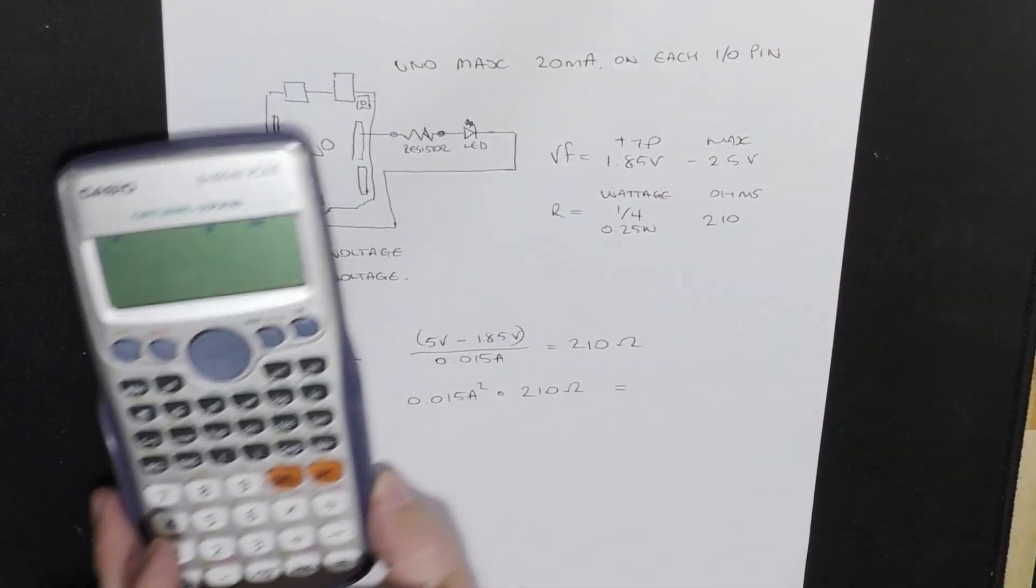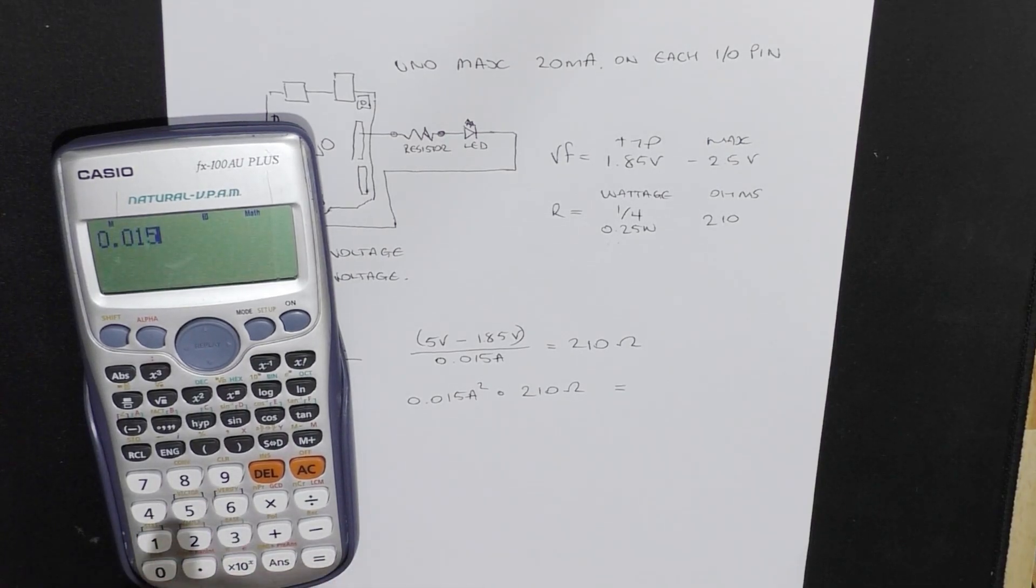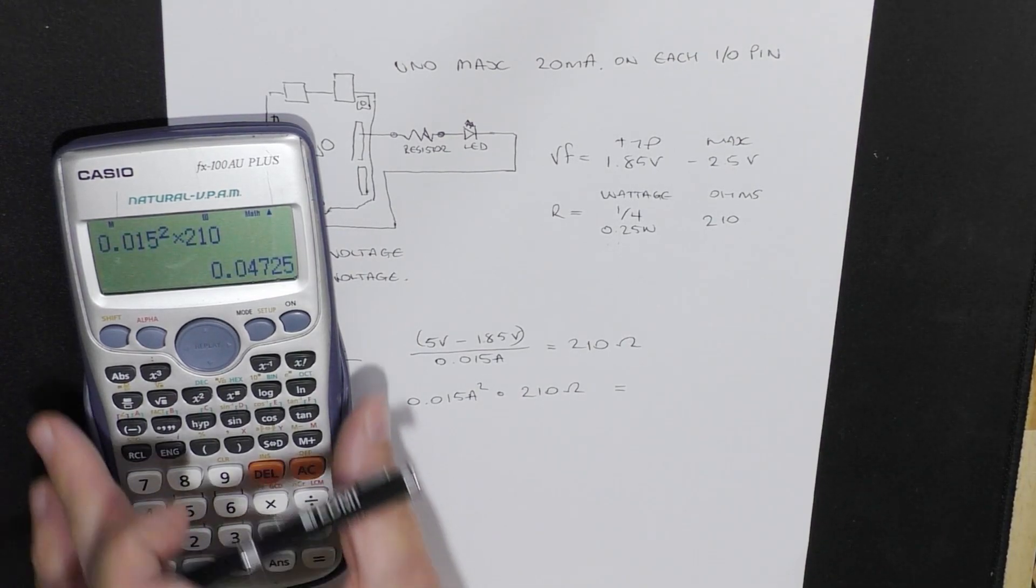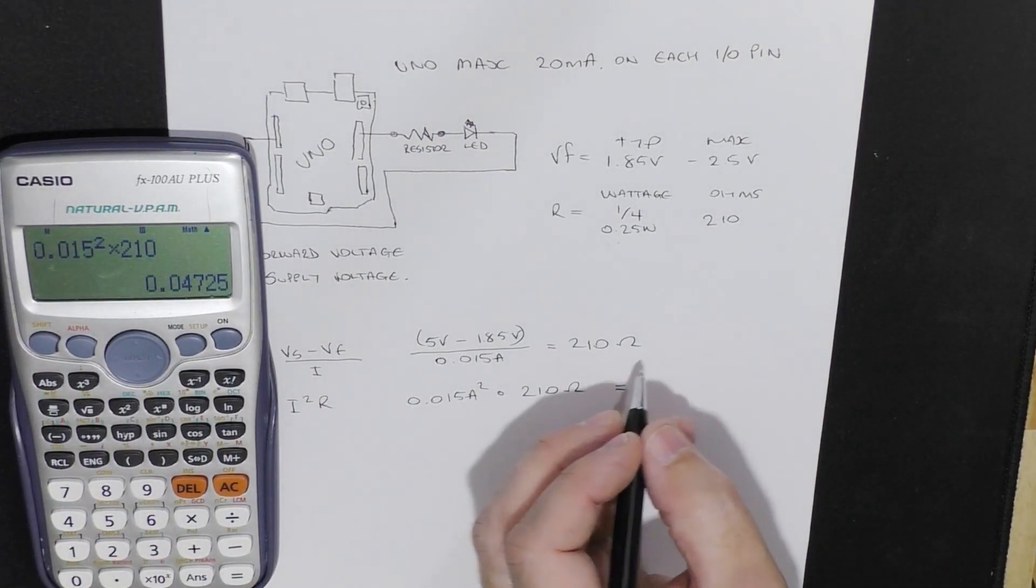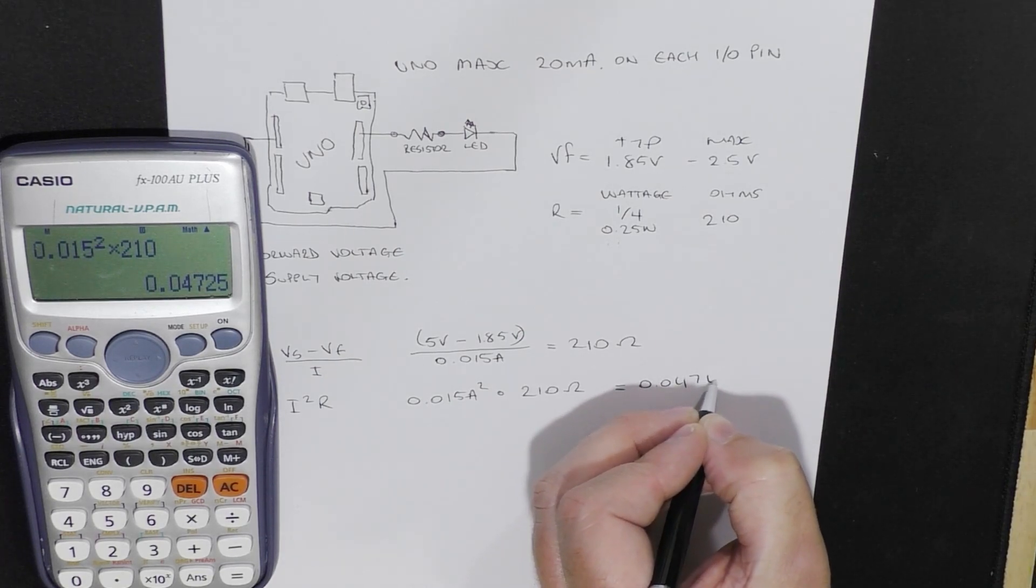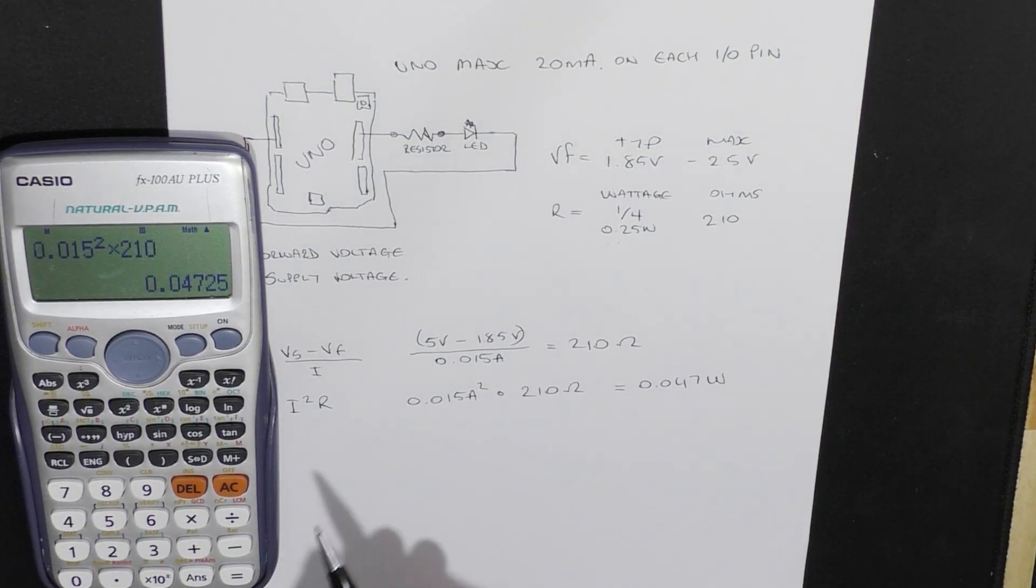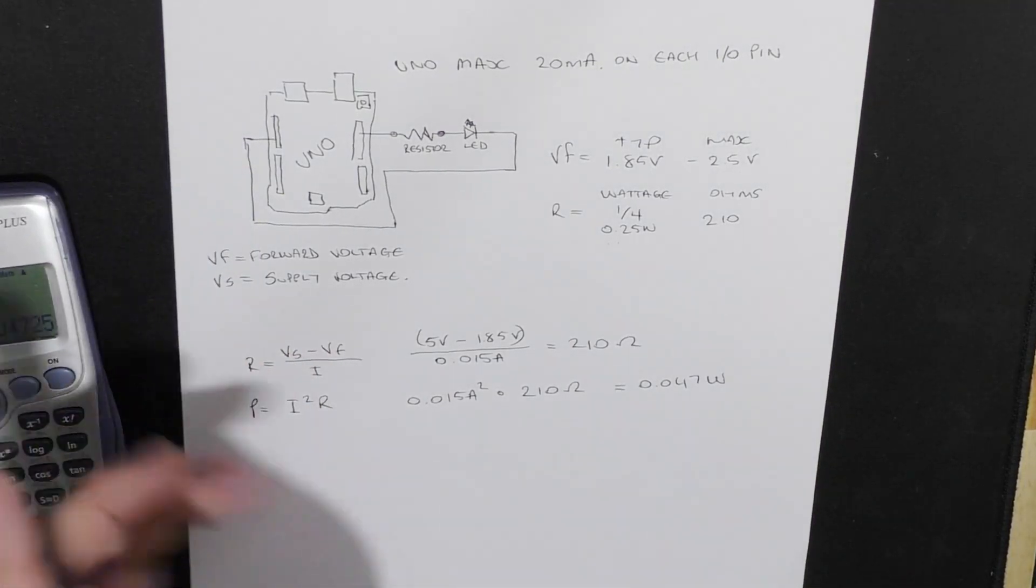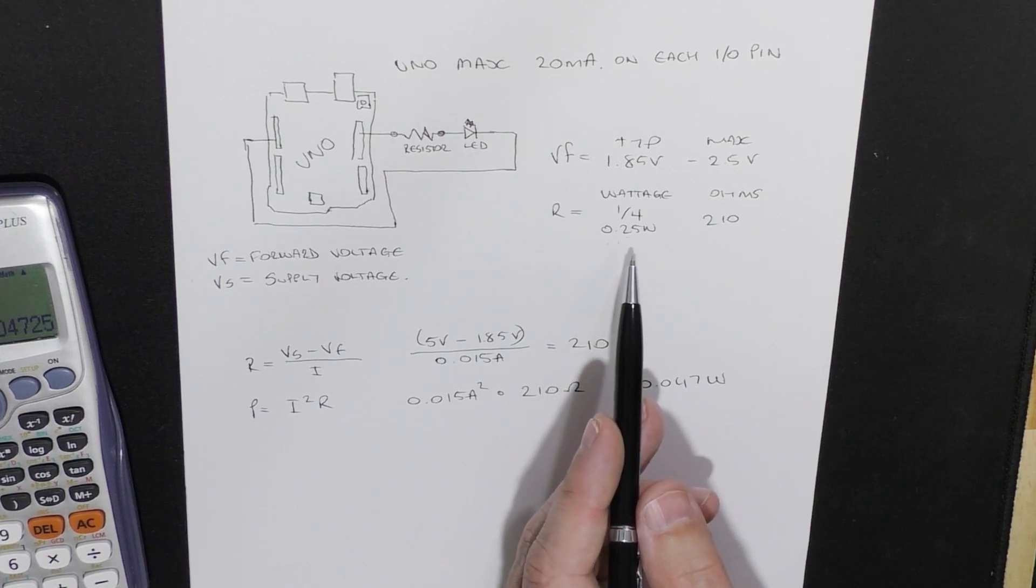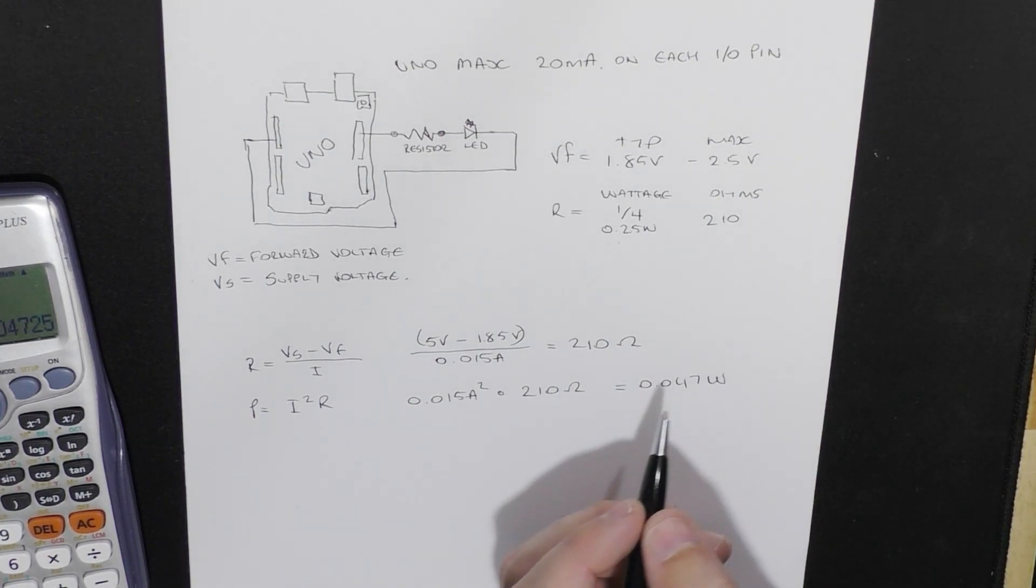So we'll clear that. We'll type that in. We'll hit the square button. Multiply by 210. 0.047 watts. So 47 milliwatts. So we know we've got plenty of space there. Because that's 250 milliwatts. And we've got 47 milliwatts.